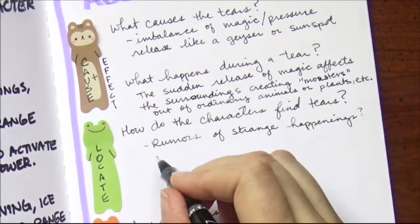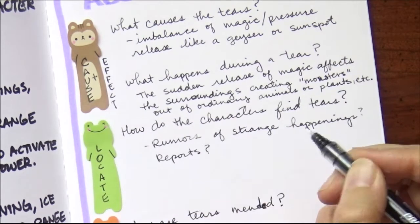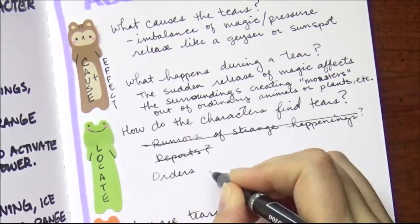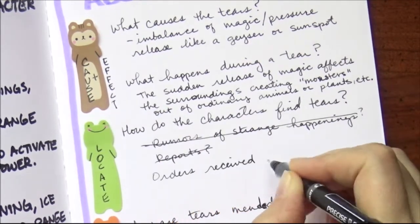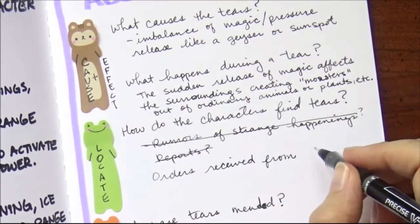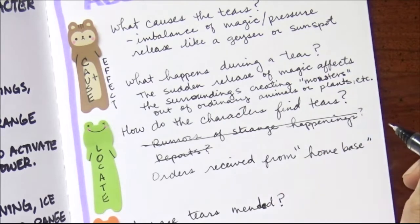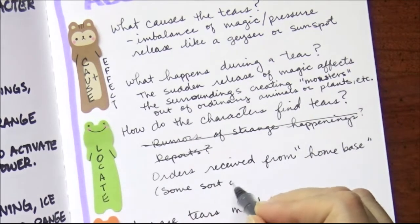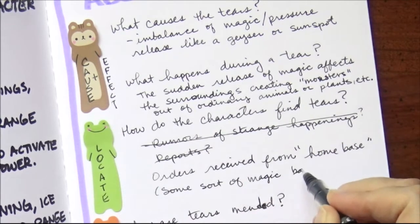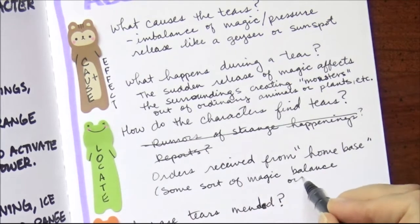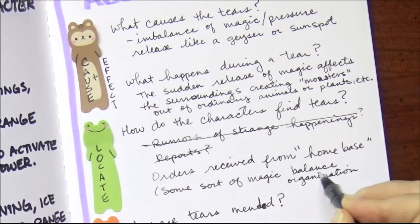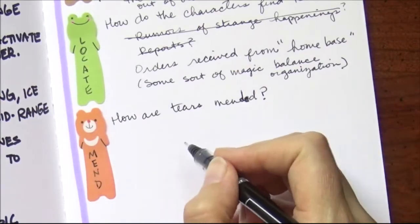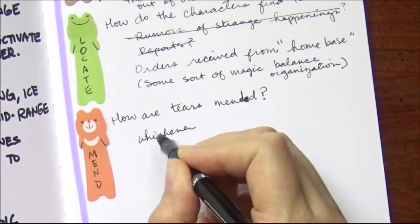How do my characters find these tears? You can see that I crossed out 'rumors' and decided they're just going to follow orders. There's going to be some kind of organization that monitors the shield, and it's like 'oh, we have a tear in sector five or whatever — go fix that.'